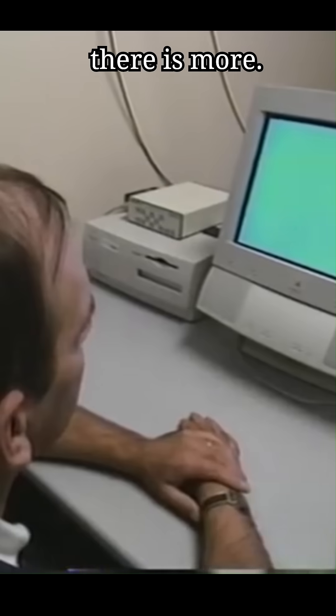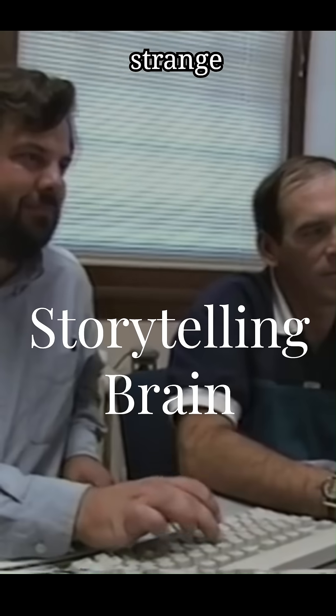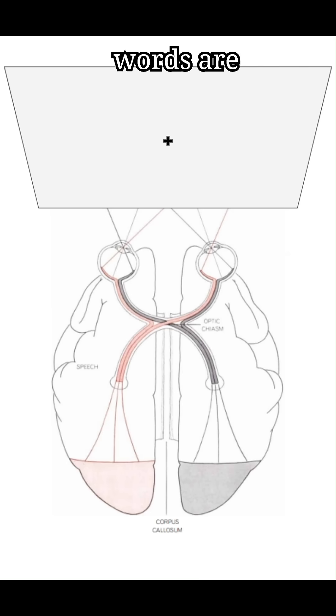But there is more. In a particularly strange experiment, two different words are shown at the same time. The word music is shown to the right visual field, which goes to the left hemisphere. The word bell is shown to the left visual field, which goes to the right hemisphere. Then the patient is asked to point to a picture that matches what he saw. He chooses the bell.